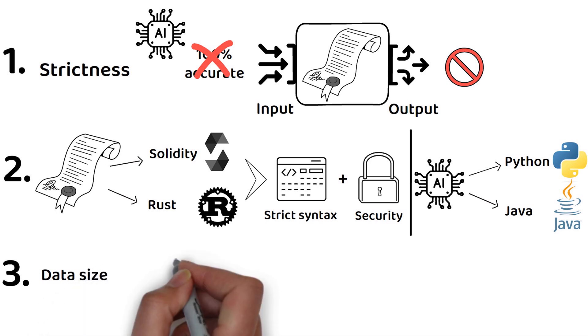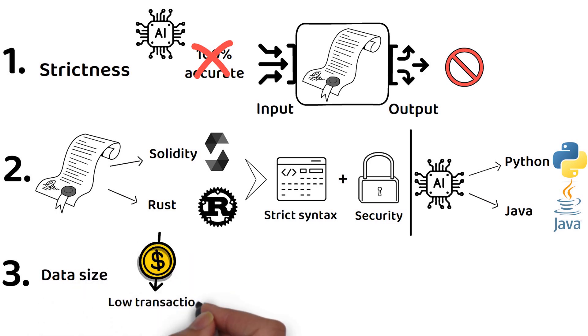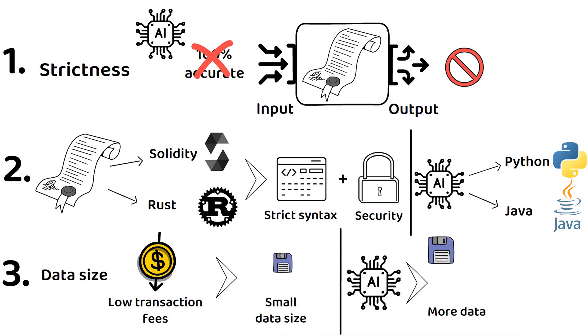Finally, there is data size. To keep transaction fees down, the data size needs to be as small as possible. However, anything that involves AI will inherently have more data attached to it, which increases costs for users.